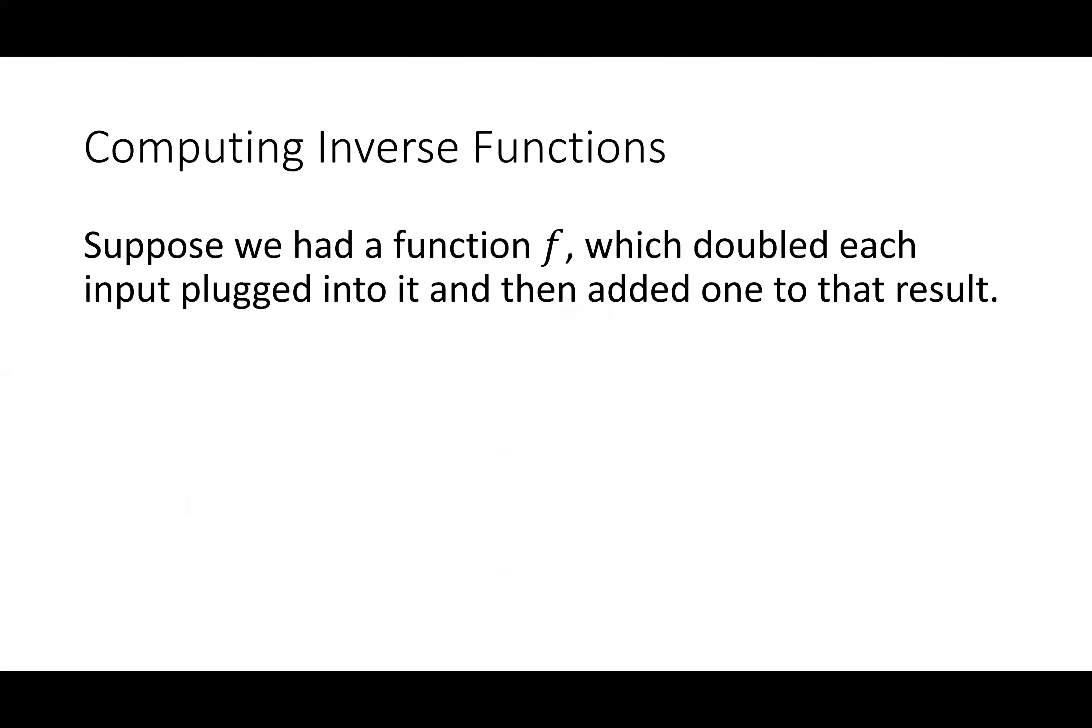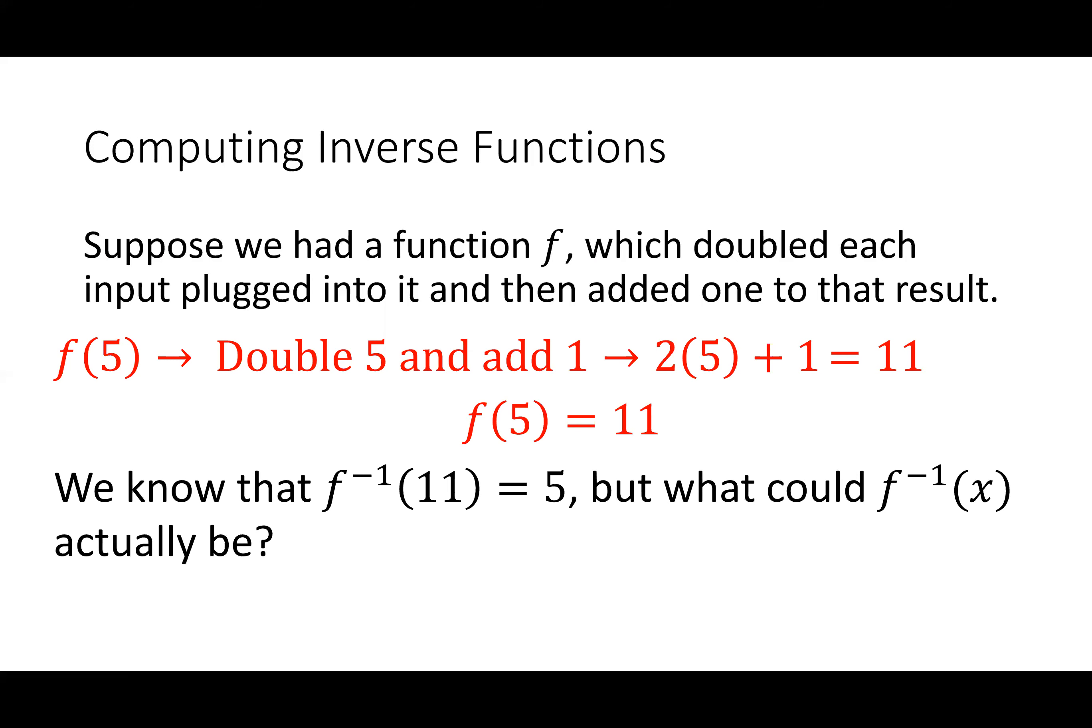So suppose we had a function F, and just think about this in your mind, which doubled each input plugged into it and then added one to that result. So imagine what would happen. So if I gave you 5, what would come out of this function? Take a second and compute that. So let's do F of 5. That means I'm going to plug 5 in. I'm going to double 5 and add 1 to it. So 2 times 5 plus 1, that should be 11. So F of 5 is equal to 11. That's our function. Now, from here we could discern that F inverse of 11 is going to be equal to 5, but what would that actual function be?